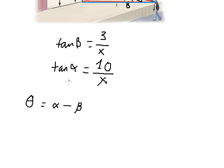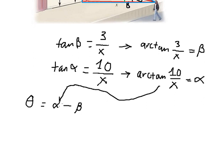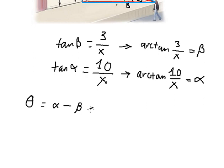Now we want to find this viewing angle, which should be alpha minus beta. To find alpha we can use arctan of (10/s), and for beta we use arctan of (3/s). So we put this one and this one together.